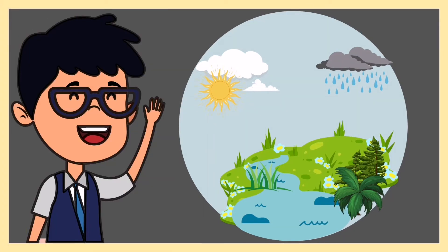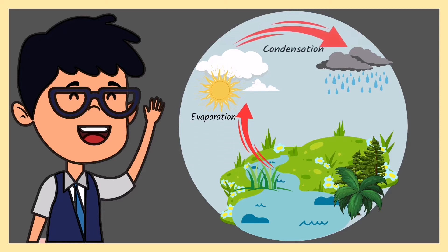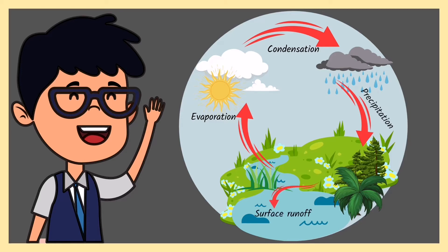So what are the processes involved in the water cycle? We have evaporation, condensation, precipitation, surface runoff of water, and transpiration. The water cycle is very important because the water that evaporated from the different forms or sources of water is needed in the formation of clouds, and life and other environmental processes will not continue without the water cycle.